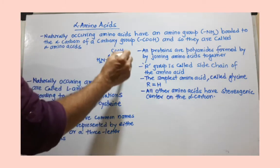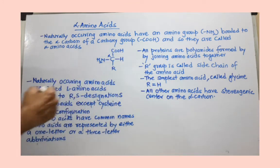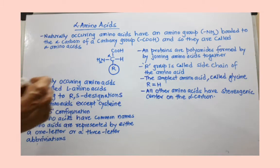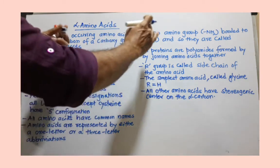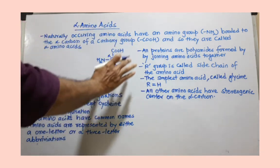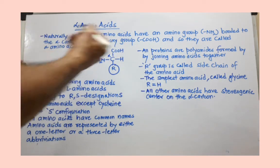All amino acids are represented by this general formula where R is called the side chain. Now we have to discuss different facts regarding these amino acids.